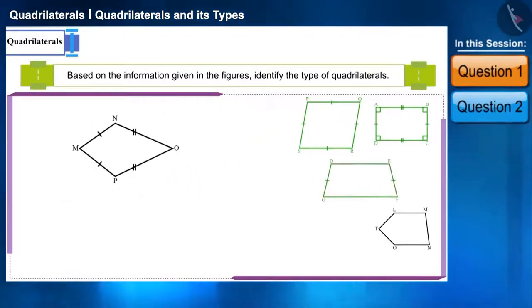Look at the fourth figure friends. On seeing it you can easily identify that this quadrilateral is called a kite. Its adjacent sides are equal.